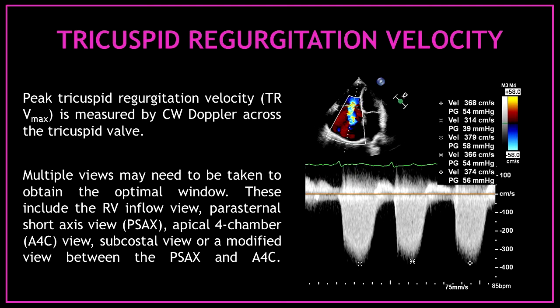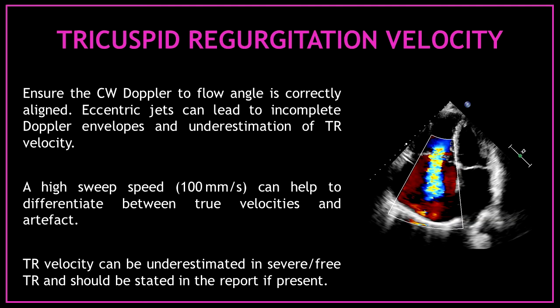Let's start with the tricuspid regurgitation velocity. The peak tricuspid regurgitation velocity is measured by continuous wave Doppler across the tricuspid valve. Multiple views may need to be taken to obtain the optimal window — these include the right ventricular inflow view, the parasternal short axis view, the apical four-chamber view, sub-costal view, or a modified view between the short axis and the four-chamber views. Always ensure the continuous wave Doppler-to-flow angle is correctly aligned. Eccentric jets can lead to incomplete Doppler envelopes and underestimation of tricuspid regurgitation velocity. Using a high sweep speed can help to differentiate between true velocities and artifacts.